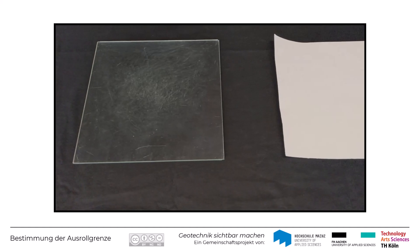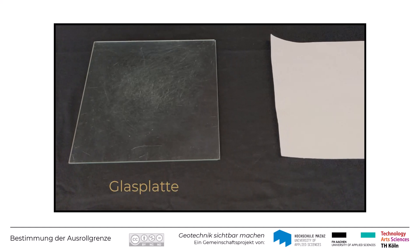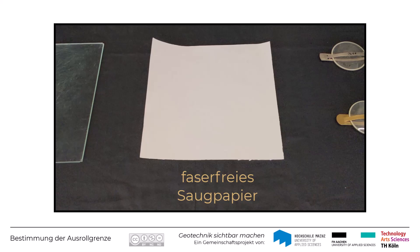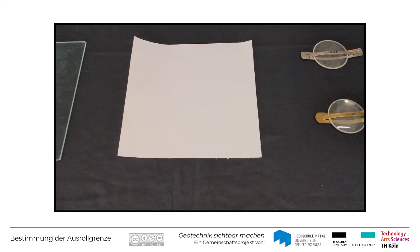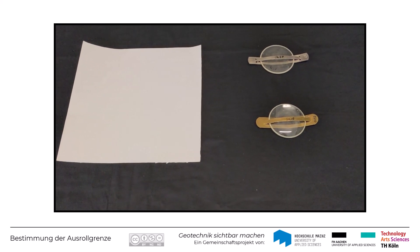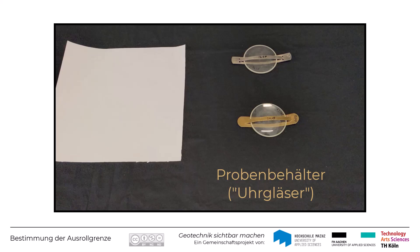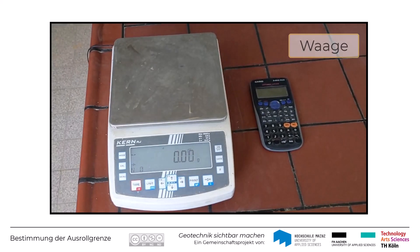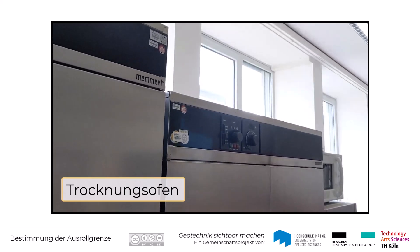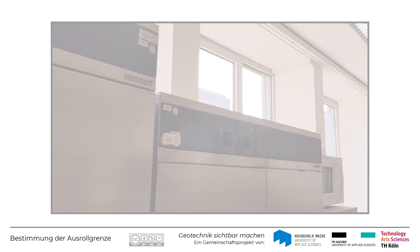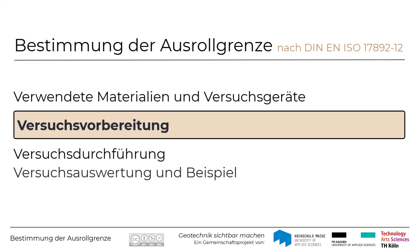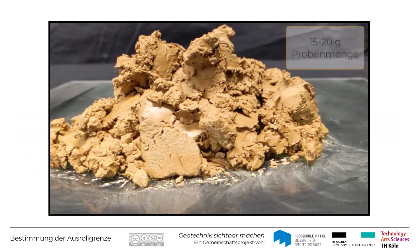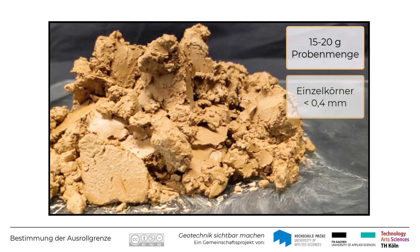Hierfür benötigt man lediglich eine flache, glatte Platte, die in der Regel aus Glas besteht. Außerdem kann ein faserfreies Saugpapier hilfreich sein, um damit die Verringerung des Wassergehaltes während des Ausrollens zu beschleunigen. Zur Bestimmung der Wassergehalte sind Probenbehälter aus Glas oder Porzellan, eine Waage und ein Trocknungsofen erforderlich. Für die Bestimmung der Ausrollgrenze benötigt man ca. 15–20 Gramm Probenmaterial mit Körnern kleiner 0,4 Millimeter.